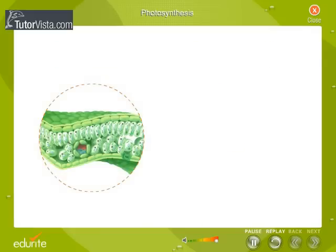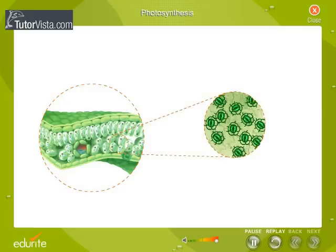Air enters the leaf through the stomata and moves into tiny spaces around the food-making cells in the leaf. Carbon dioxide from the air passes through the cell walls and membranes of the cells.